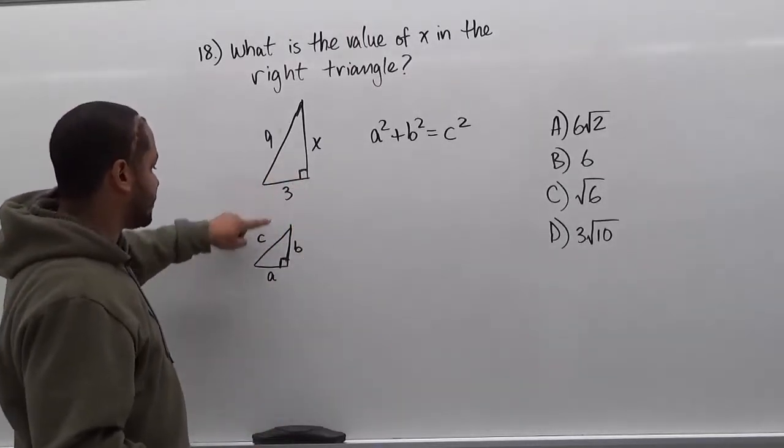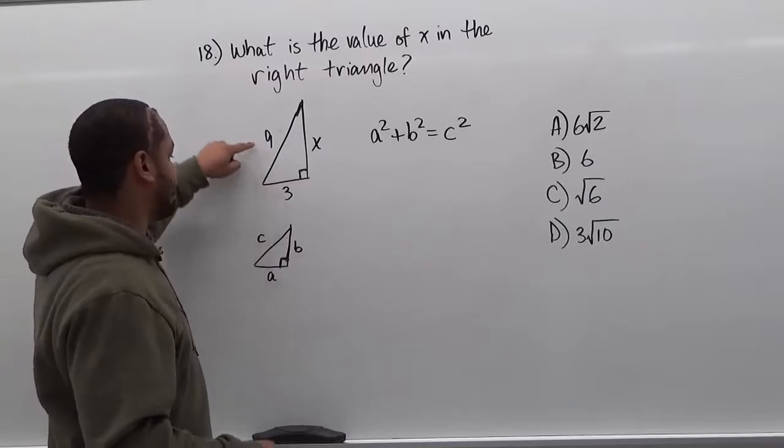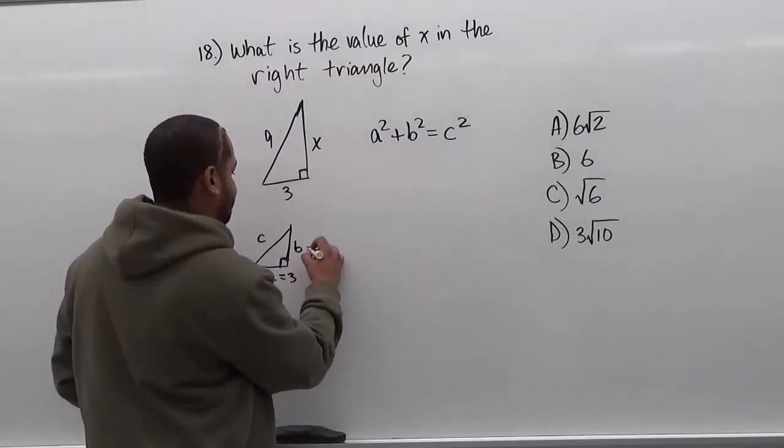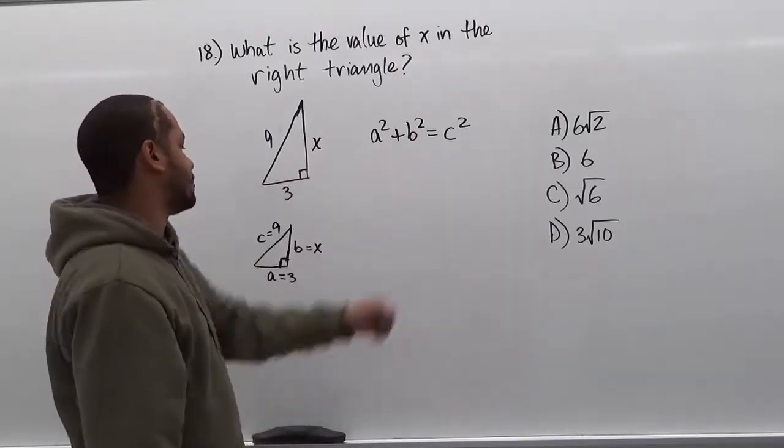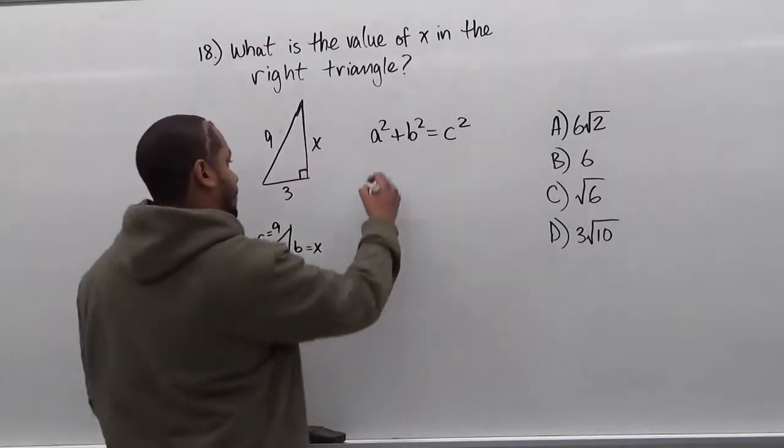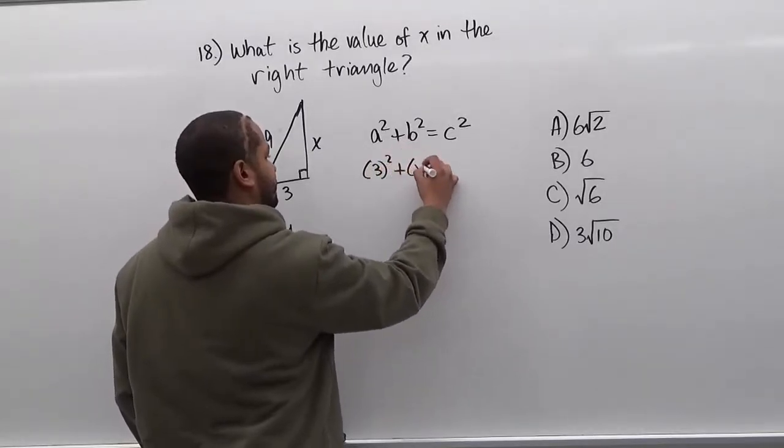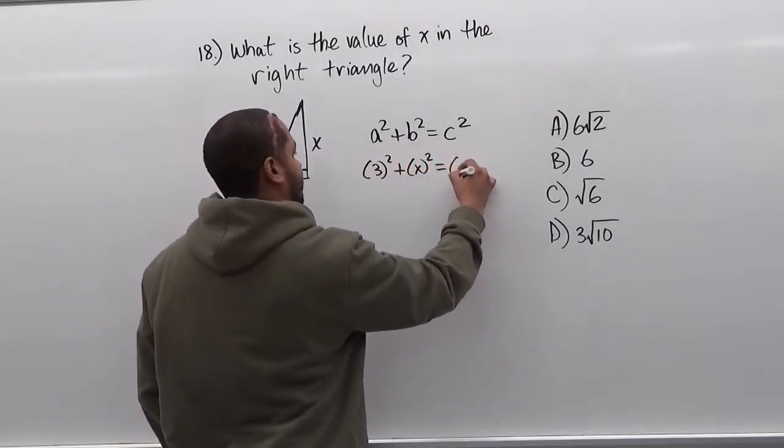Now we're going to substitute every value for every side we have here, where a = 3, b = x, and c = 9. So we have 3² + x² = 9².